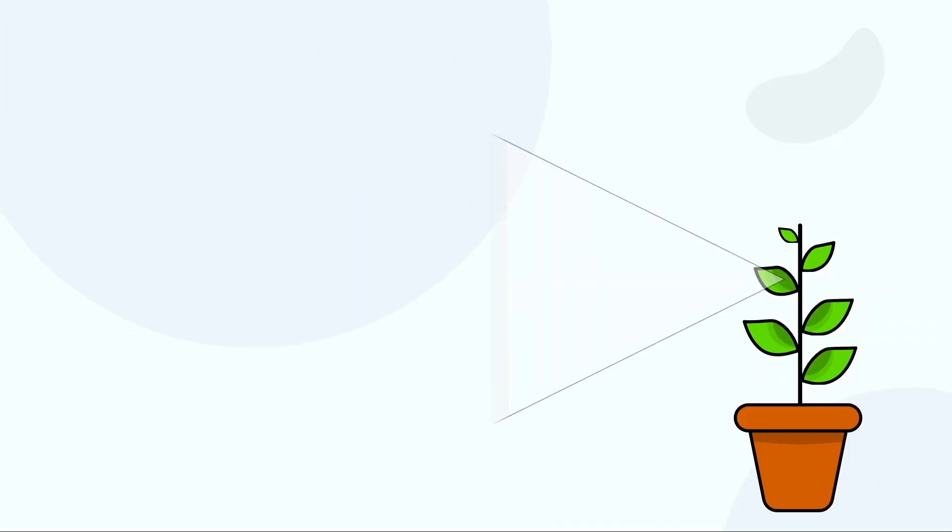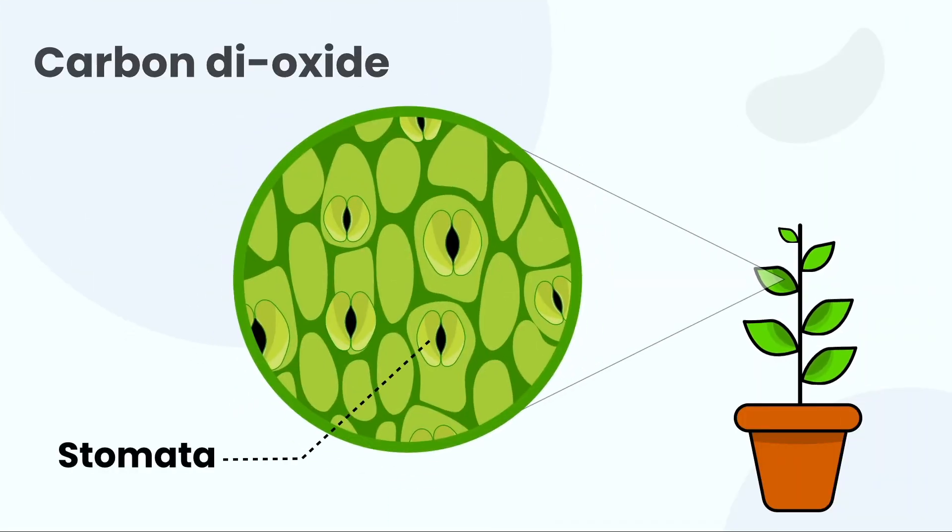When the plants breathe, the stomata opens up and the carbon dioxide enters the plant cells, which finally enters the stroma too.